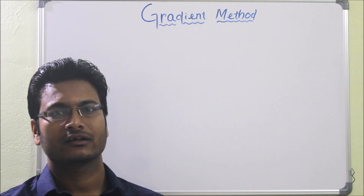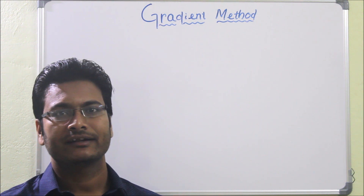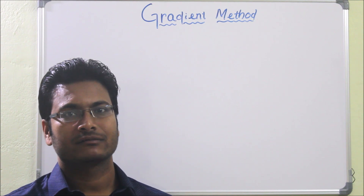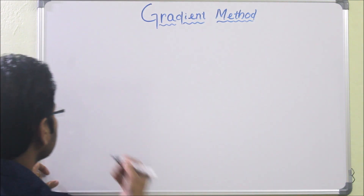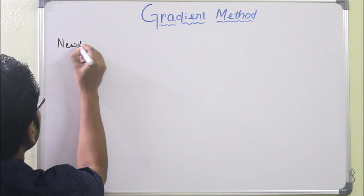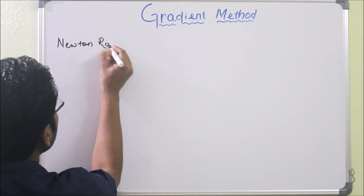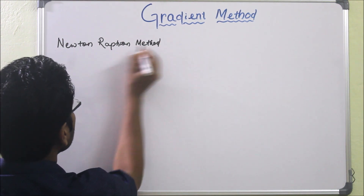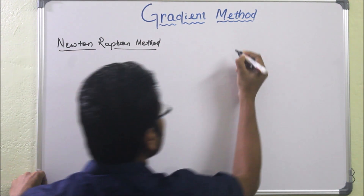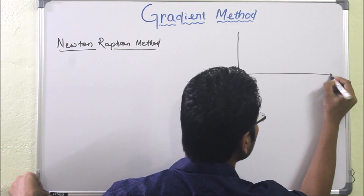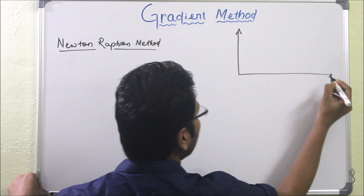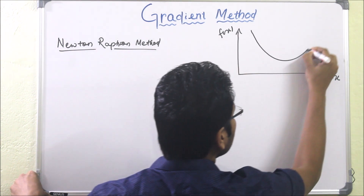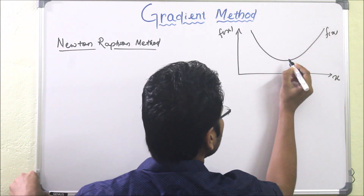Today we will see one gradient-based method to find the minimum of a unimodal function, and we will see Newton-Raphson method. So first we will have a unimodal function, then we will see how to proceed and how to find the minimum value of the unimodal function f of x.